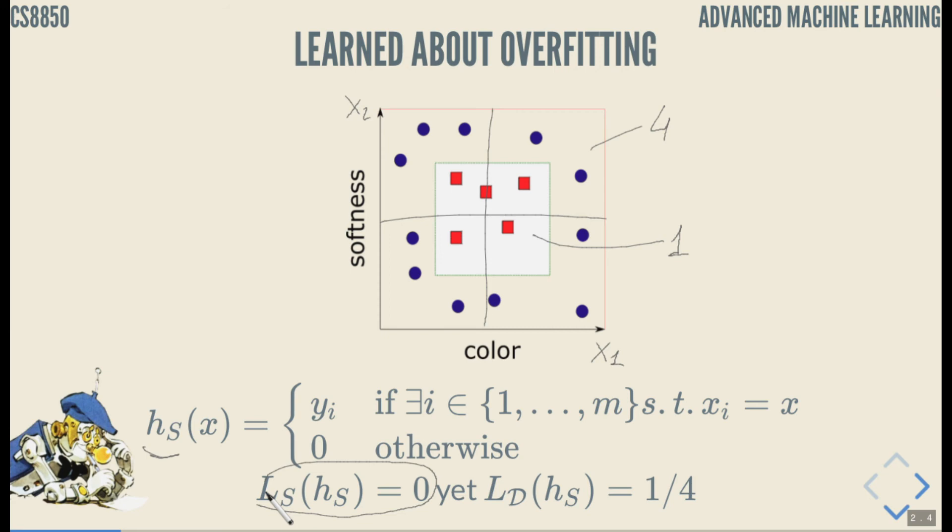But wait, if we do that then our actual loss, true loss, will be only 1 over 4 because it will end up with correct label only in 1 over 4 cases, in a quarter of cases. It will return zero in most of the places when it should have returned 1. So the error of the true loss will be 1 over 4.